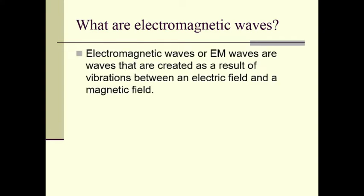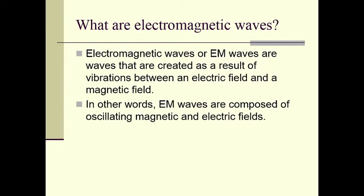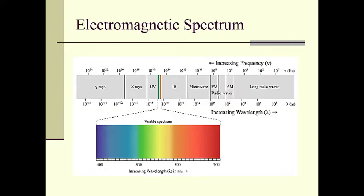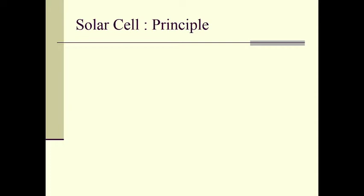Electromagnetic waves are waves created as a result of vibrations between an electric field and a magnetic field. In other words, electromagnetic waves are composed of oscillating magnetic and electric fields. The electromagnetic spectrum contains different waves arranged by increasing wavelength or increasing frequency. We are concerned with the visible region, which falls between UV and IR radiation. This visible spectrum is visible to our eyes and spans between 400 to 700 nanometers in wavelength.